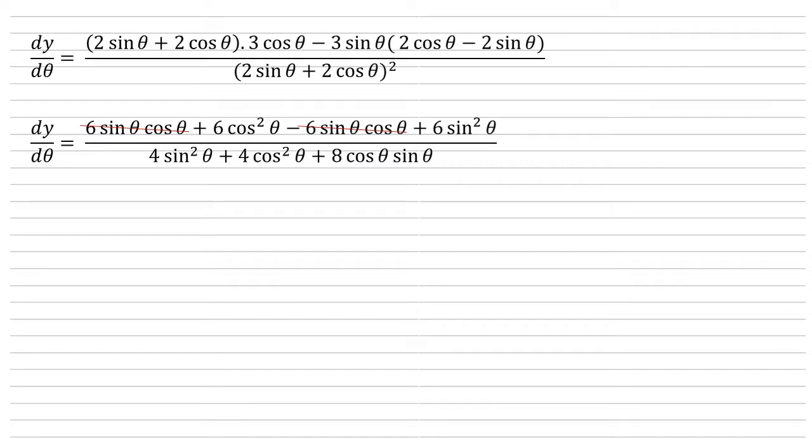We can now see that both top and bottom we've got some cos squareds plus sine squareds, and we've got cos theta sine theta. So remember we've got some identities for these: cos squared plus sine squared equals 1, 2 cos theta sine theta equals sine 2 theta.